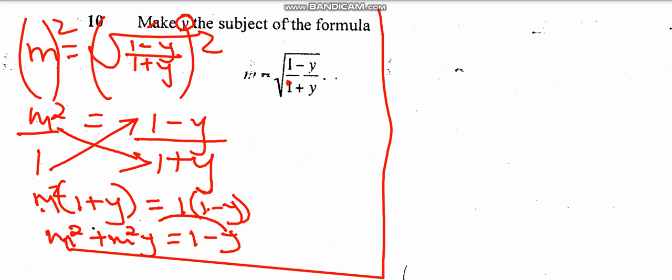So now to have y as the subject, we need to move terms around. We're going to move m squared y, and minus y goes to the other side, it becomes plus y equals. We have 1, and m squared goes to the other side, it becomes minus m squared.